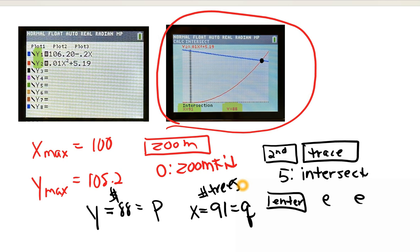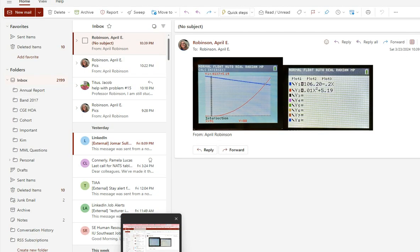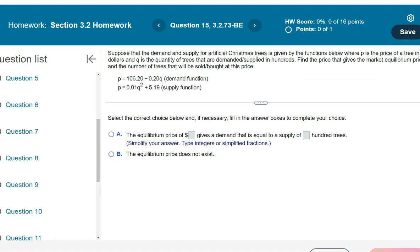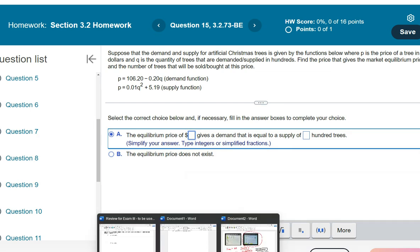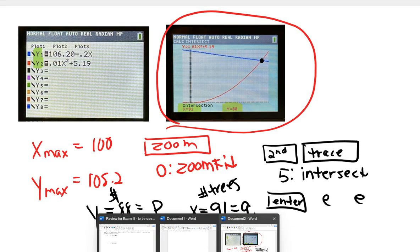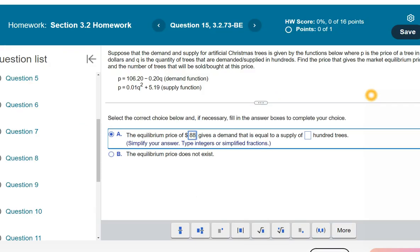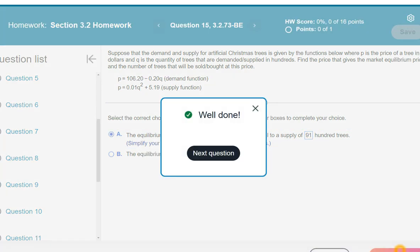And then just to verify that I did this correctly, where is my MathLab question? It is right here. Okay. So, the price was, what was it? I can't remember nothing. 88. Yeah, price was 88. Quantity was 91. So, 88. 88. 91. Oh, please say it's a great answer. There we go. Well done. Thank goodness.